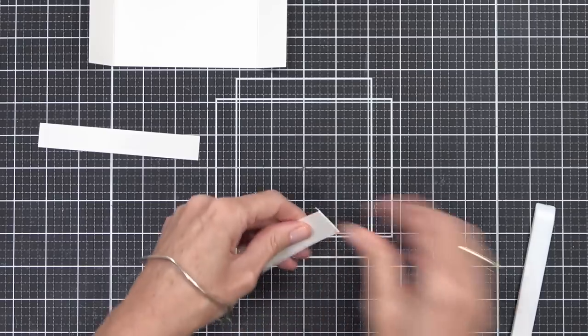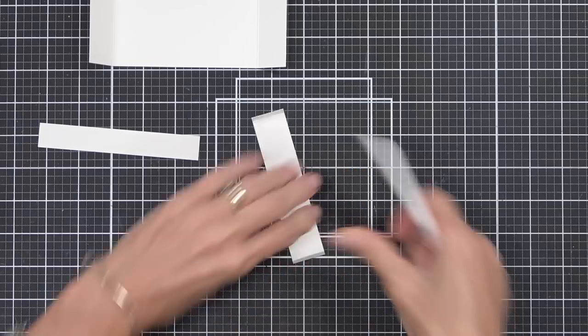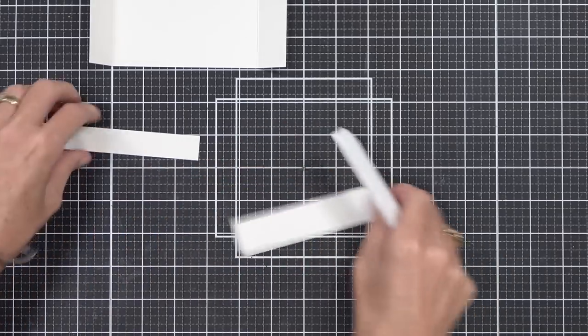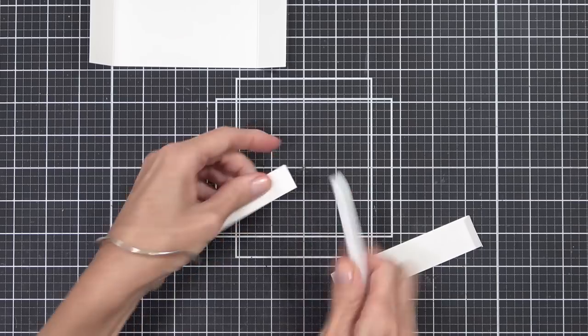Both of those have been scored at a quarter inch at each end, and I am using a bone folder here just to burnish those folds to make sure they're nice and crisp. You can use your thumbnail or just a ruler if you don't have one of these.